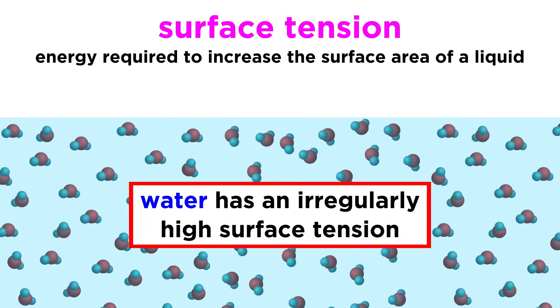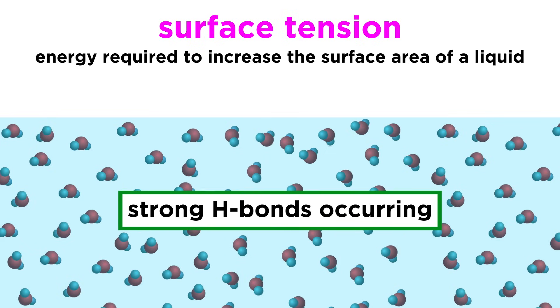Different liquids have different surface tensions, and water has an irregularly high surface tension, considering the small size of the molecule. This is because of the strong hydrogen bonding occurring.